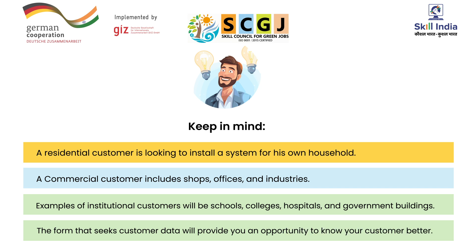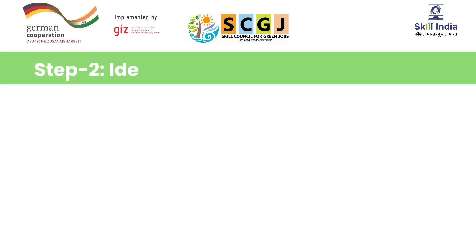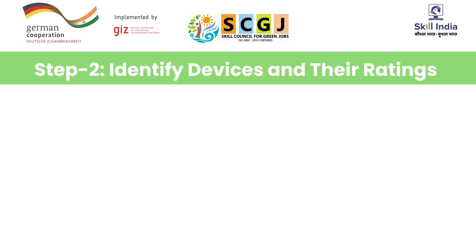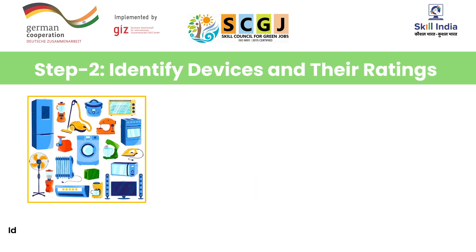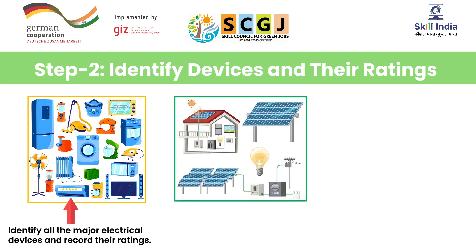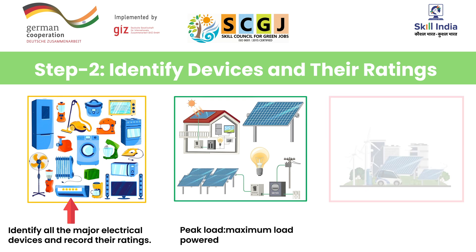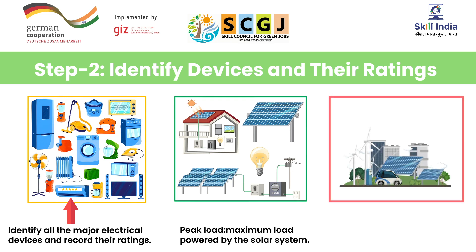This will help in ensuring that you can later satisfy their needs in the best possible way. Step 2 involves identifying devices and their ratings. To estimate peak load, you must identify all the major electrical devices and record their ratings. This will be the maximum load that will need to be powered by the solar system, assuming the customer has unlimited space and budget.